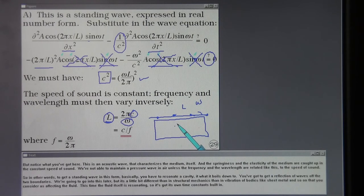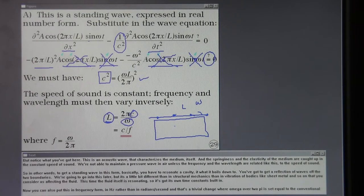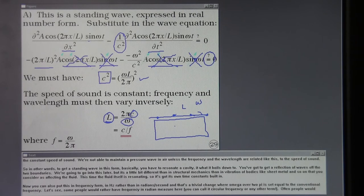So in other words, to get a standing wave in this form, basically you have to resonate a cavity is what it boils down to. You've got to get a reflection of waves off the two boundaries. We're going to go into this later, but it's a little bit different than in structural mechanics, than in vibration of bodies like sheet metal and so on that you consider as affecting the fluid. This time the fluid itself is resonating.